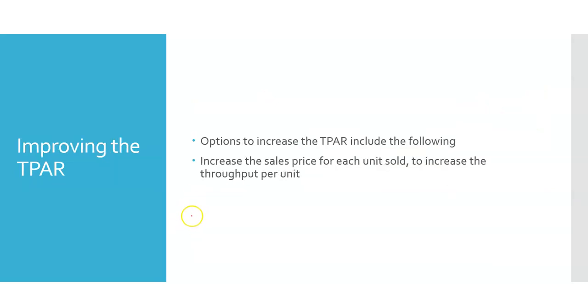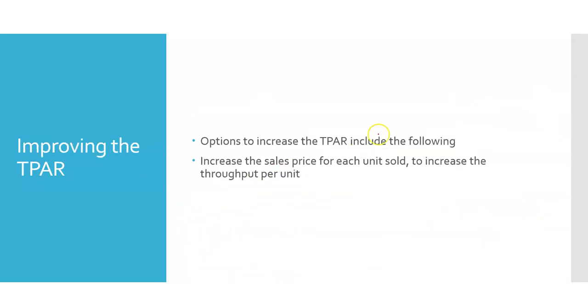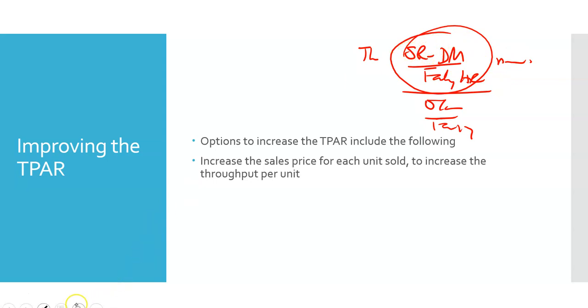So what you get in the exam a lot of the time is how can you improve this 1.4? Well, there is a math way of looking at it. The issue here is if this is the throughput, if this is sales revenue minus direct materials per factory hour divided by operating costs per factory hour, and I'm trying to improve this numerator, then it means that anything I do to improve my sales revenue is great. Anything I do to reduce my direct materials is great. Then my TPAR will go up.